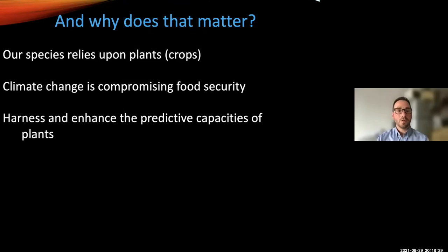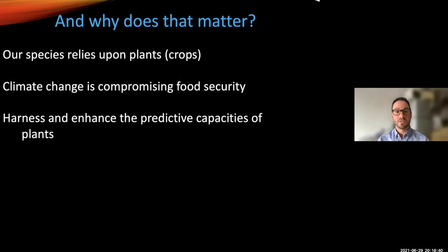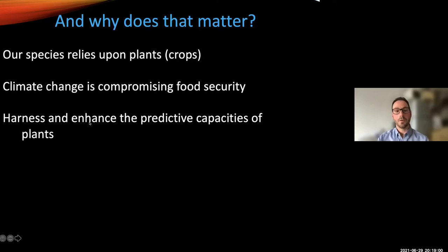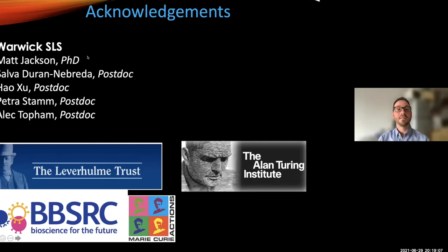Why does this matter? Our species relies on crops, and climate change is compromising food security. Plants flowering prematurely — France has just lost 90% of its wine harvest in some regions. If we can control the processing of temperature signals and control flowering time, we could mitigate these crop losses. We've also developed a technique using image analysis to map the connectivity between cells at single-cell resolution — turning tissues into networks where balls represent cells and lines the connections — to map the connectome of all cells within tissues and explore communications between cell types. Thank you to Matt Jackson, Salva Durand Mbreda, Haushu, Petra Stam, and Alec Topham, and funding from Leverhulme, the BBSRC, the EU, and the Alan Turing Institute.